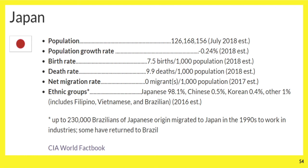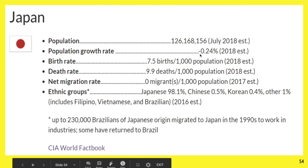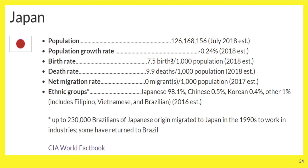You can see Japan, for example, has been experiencing this. They have a negative 0.24% population growth rate — meaning it's decreasing — for every 7.5 births out of a thousand, there are 9.9 deaths. So more people are dying, way more people are dying than are being born. And they don't have a ton of immigration. When you look at ethnic groups in Japan, 98.1% of people are Japanese. So it's tough to convince other people from other countries to come into this culture where you are very, very much the minority.